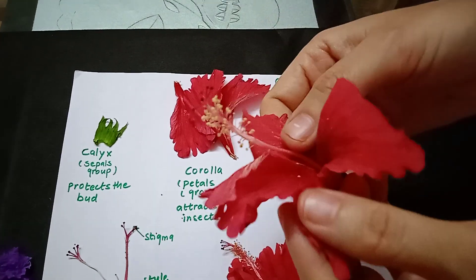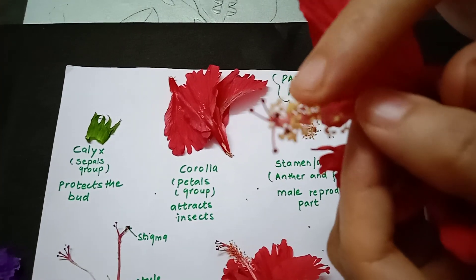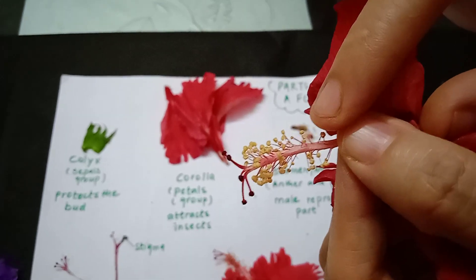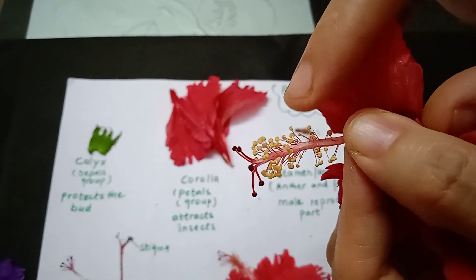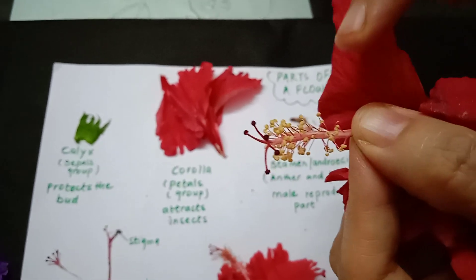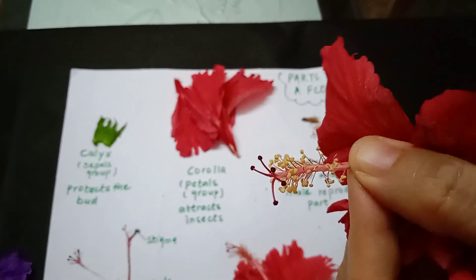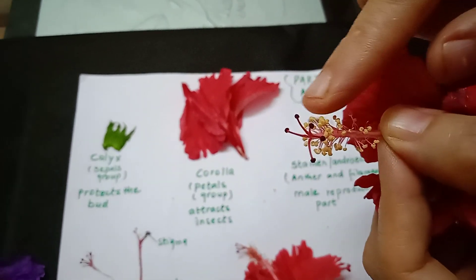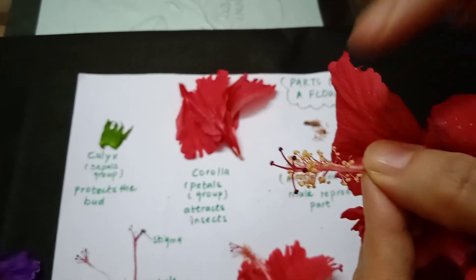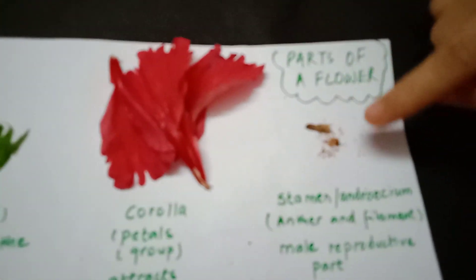The third whorl of the flower is the yellow structure with a thin tube underneath it. This yellow structure and thin tube together form the male reproductive part of the flower, called the stamen or androecium.